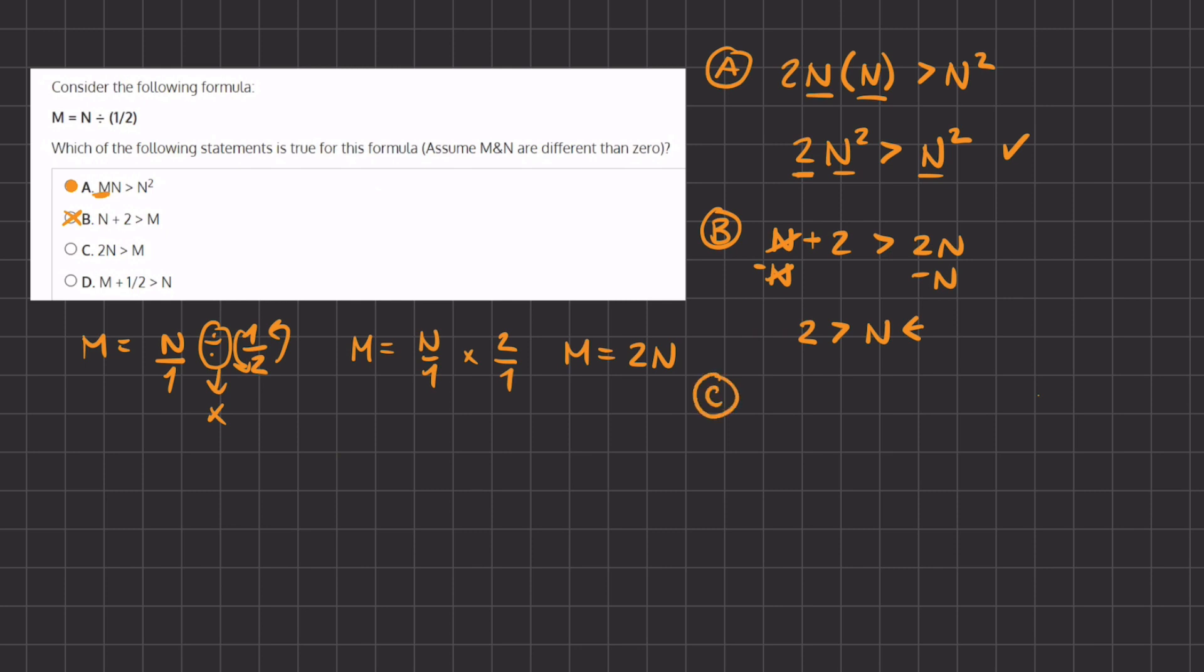And C, let's see what C states. 2N is greater than M. So again, we are going to fill in what the value of M is with 2N, and 2N should equal 2N. And because there is a greater sign in between them, that is an incorrect statement.